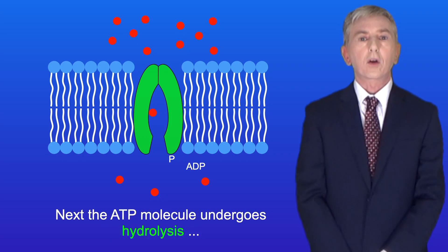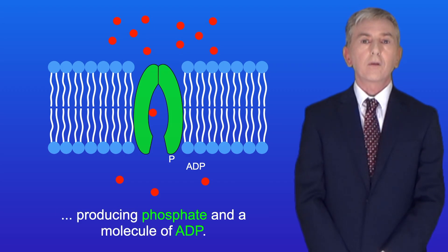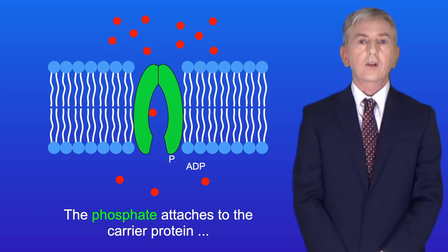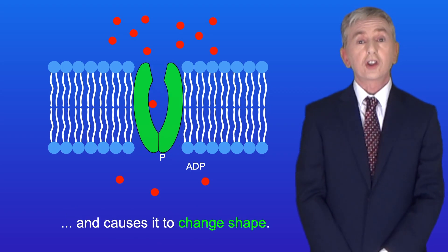Next, the ATP molecule undergoes hydrolysis, producing phosphate and a molecule of ADP. The phosphate attaches to the carrier protein and causes it to change shape.